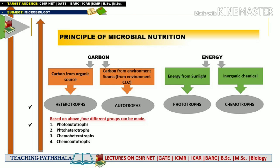First, let's talk about the carbon source. If an organism is capable of taking carbon from an organic source, we call that organism a heterotroph. Heterotrophs fulfill their carbon need with the help of organic sources. If a microorganism fulfills its carbon need with the help of environmental carbon dioxide, we call it an autotroph. Plants are autotrophs because they use carbon dioxide to prepare their food, converting CO2 into glucose through photosynthesis.